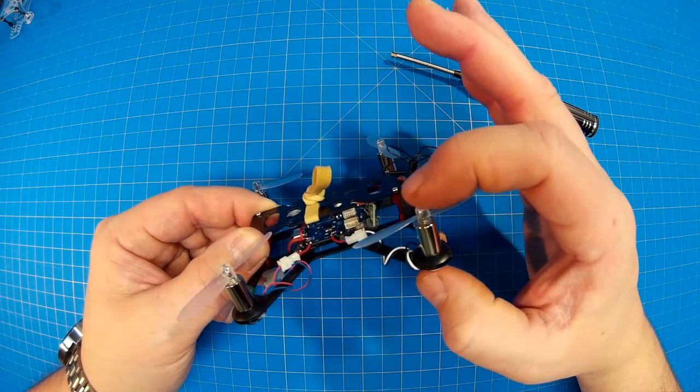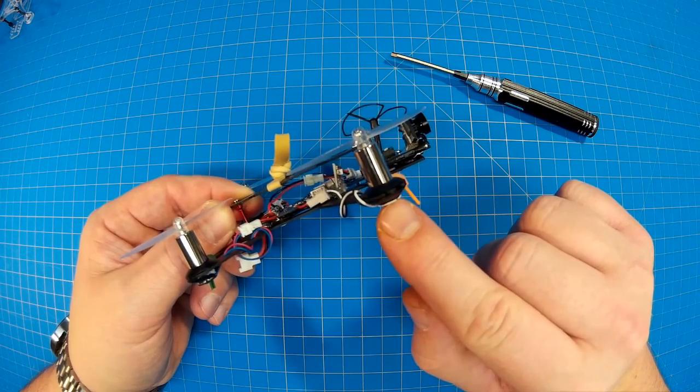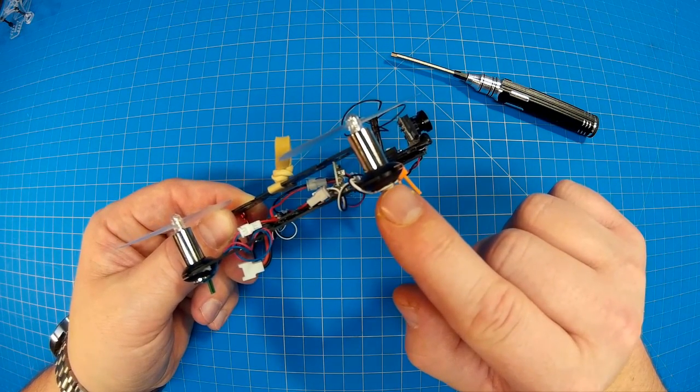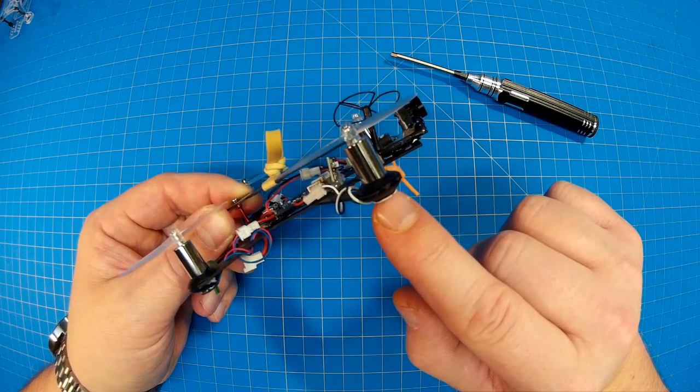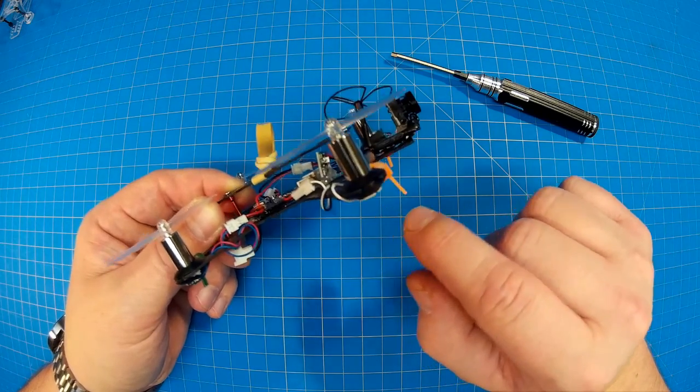So when you do have a crash, it hits the motor housing and doesn't push the prop or the bell casing down through. And then you end up with a disconnected motor, which, by all accounts, is unfixable. So you have to replace it. Even if you get it back in there, they rarely run right.